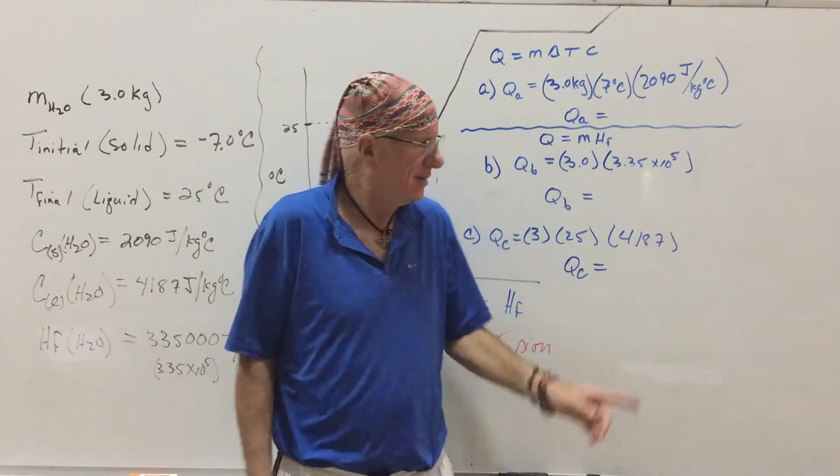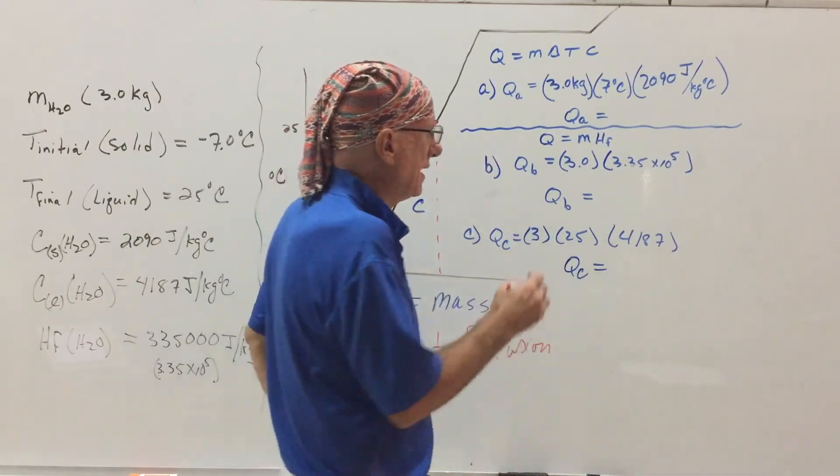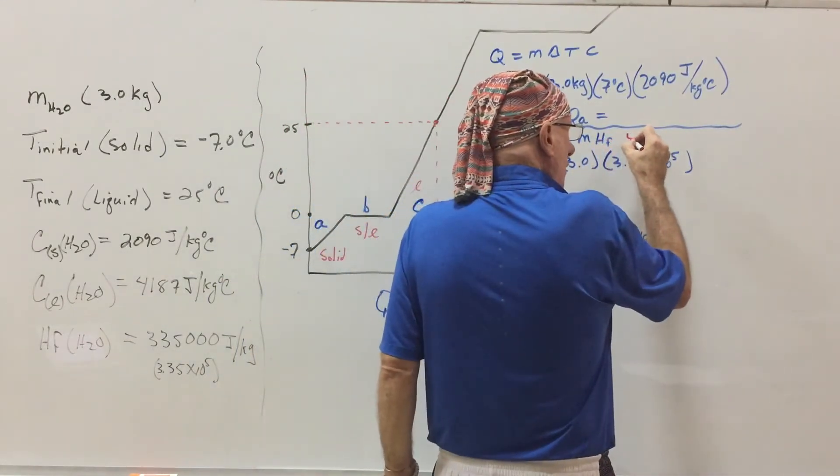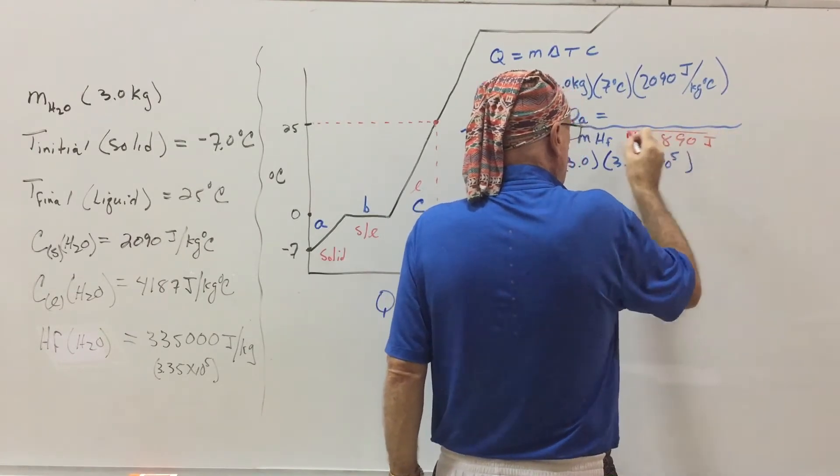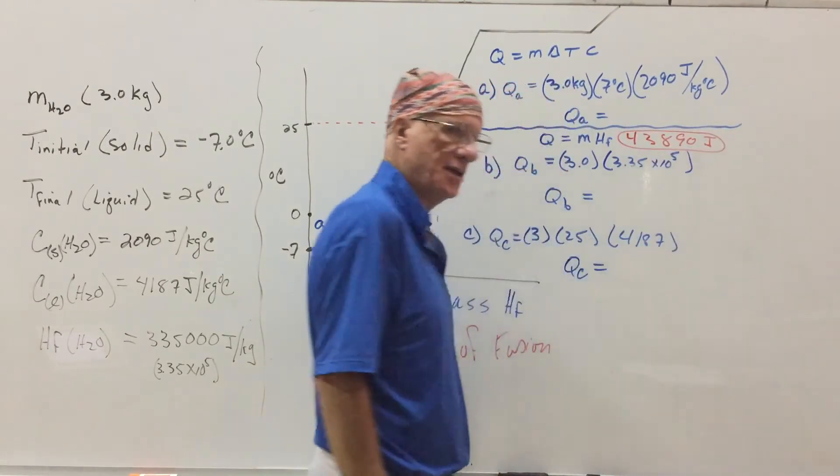And so, this first heat is going to be 43,890 joules. That's the first heat, if you do that on your calculator.